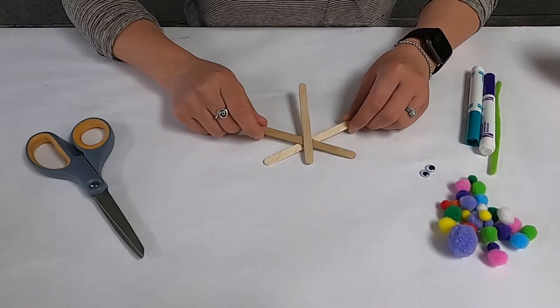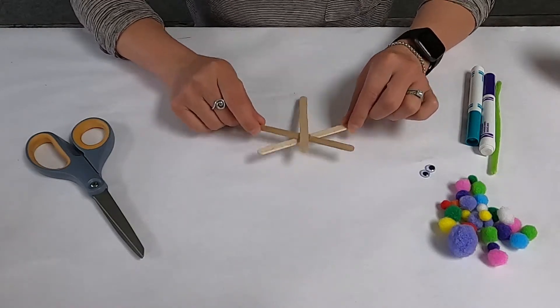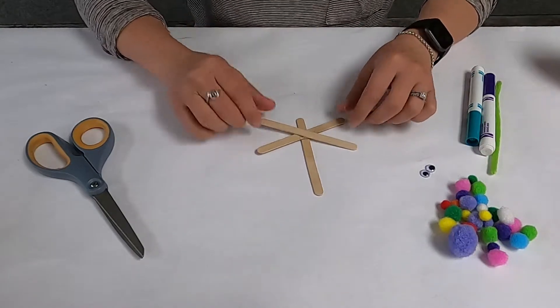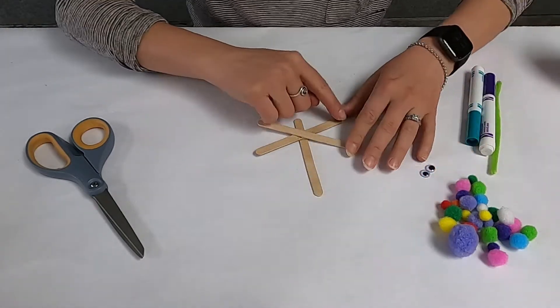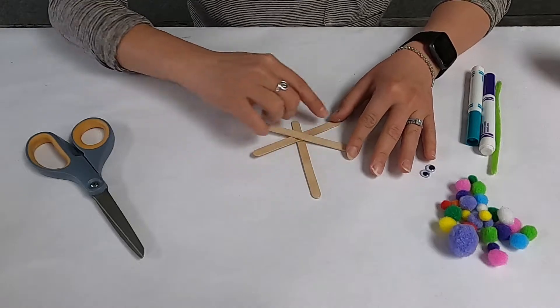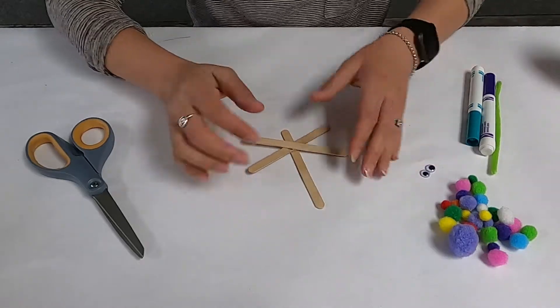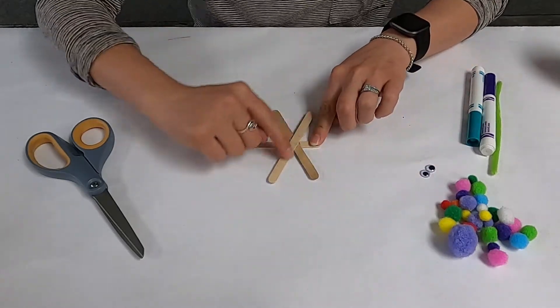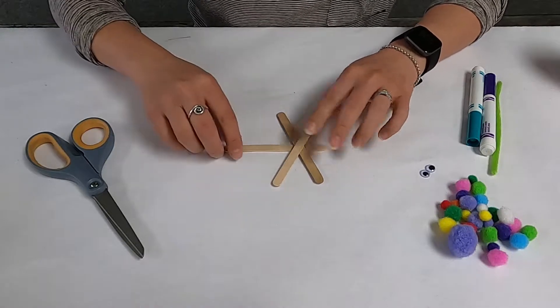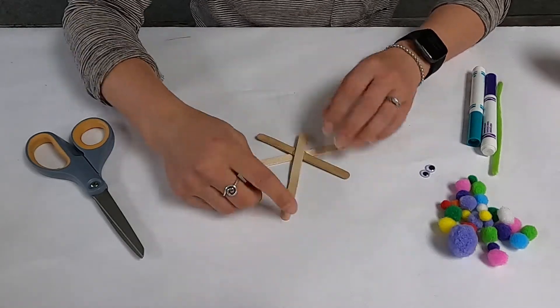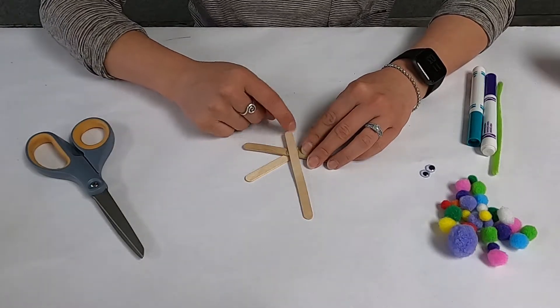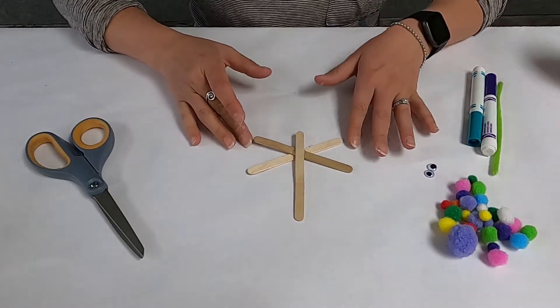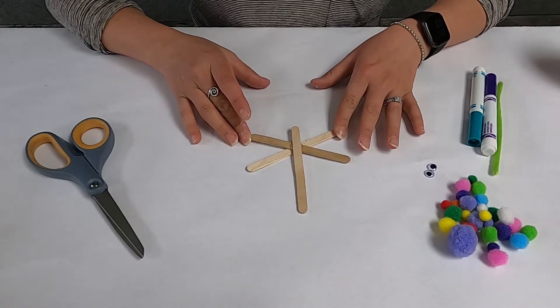So the first thing you want to do is glue your sticks together. You want to take two sticks and glue them like this in a skinny X, you see, like right here. You want to glue those together first, and then you want to take your straight piece here and glue it right to the top, which is a little bit sticking out, so it has the general shape of a dragonfly.